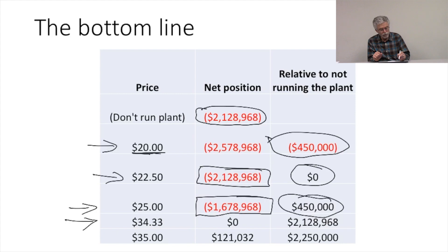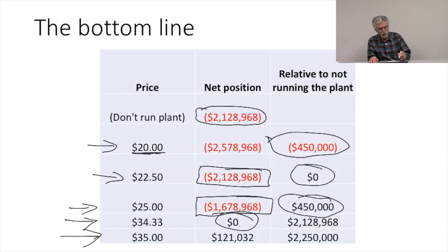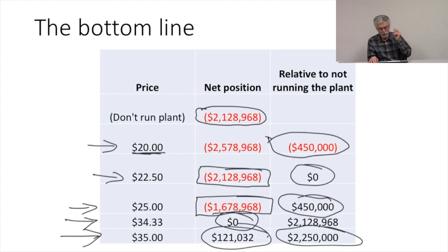At an offer of $34.30, our net position is zero — we're making up our fixed costs and our variable costs, making what we'd call zero profits. In this case, zero profits means we're covering all our costs plus a fair rate of return on our invested capital. Any offer over $34.30, and we're actually making a net profit in addition to what we need to earn to pay a fair rate of return on capital.